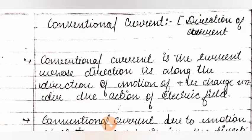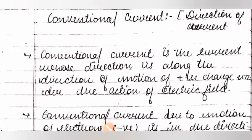This is lecture number 3.2 and here we are going to discuss conventional current — that is, the conventional direction of electric current. In a circuit or in a conductor, there is a particular flow of electrons in a particular direction. The direction of electric current is always opposite to the direction of motion of electric charges, that is, negative charges.